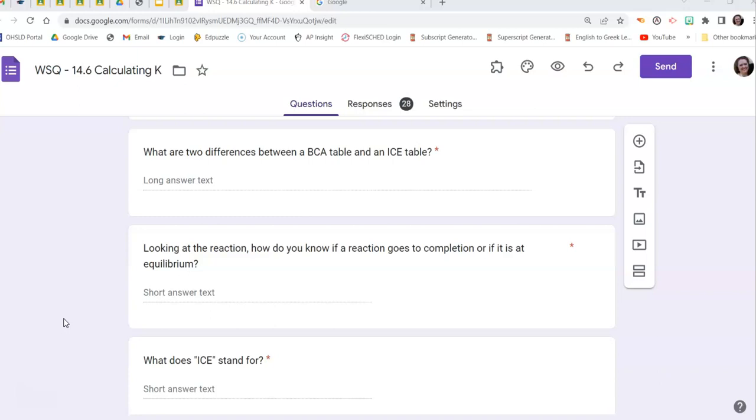All right. So you use a BCA table in reactions that go to completion, mainly like if you form a solid that's going to drive it to completion. So how do you know the difference? Oh, that's a really important question. You look at your arrows. So if it's a singleton arrow, it goes to completion. If it's a double arrow, you're in equilibrium.